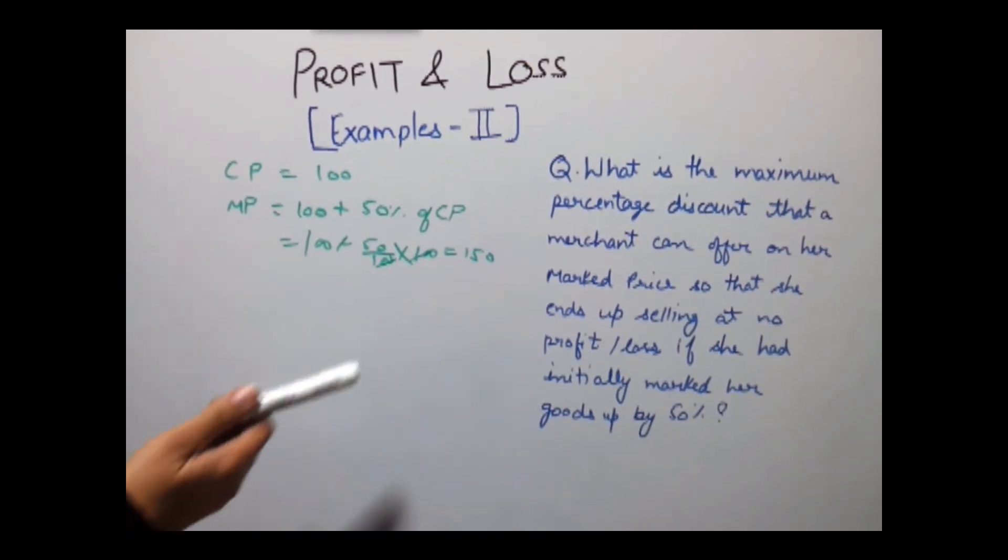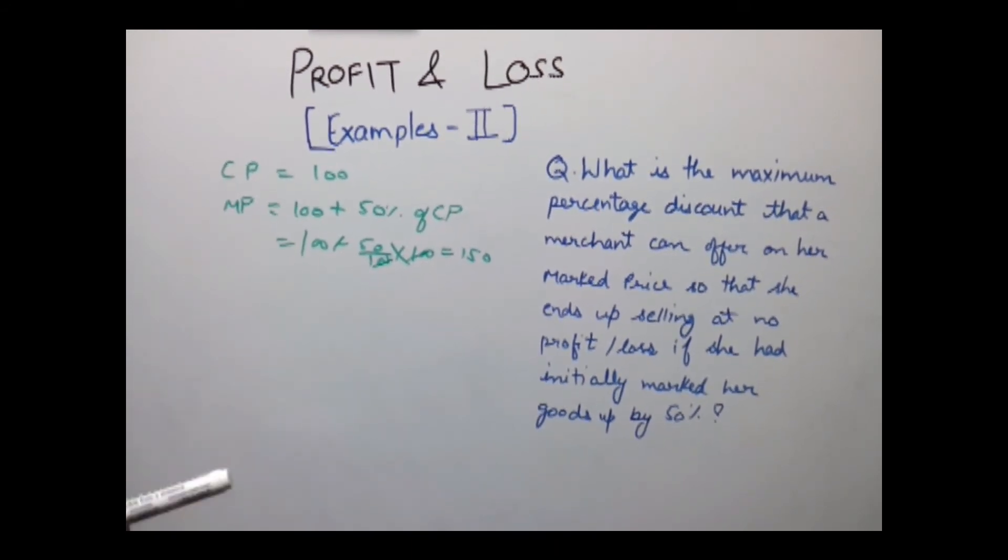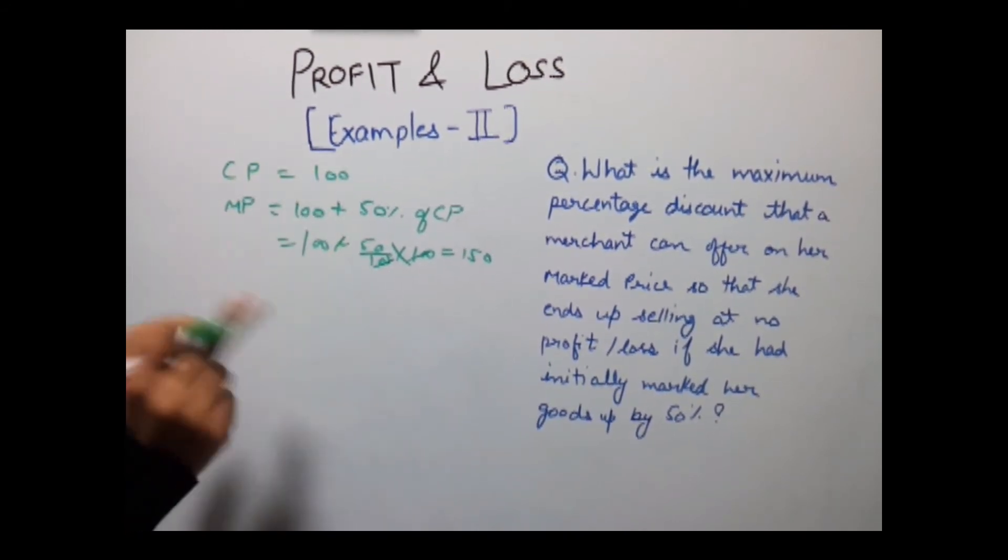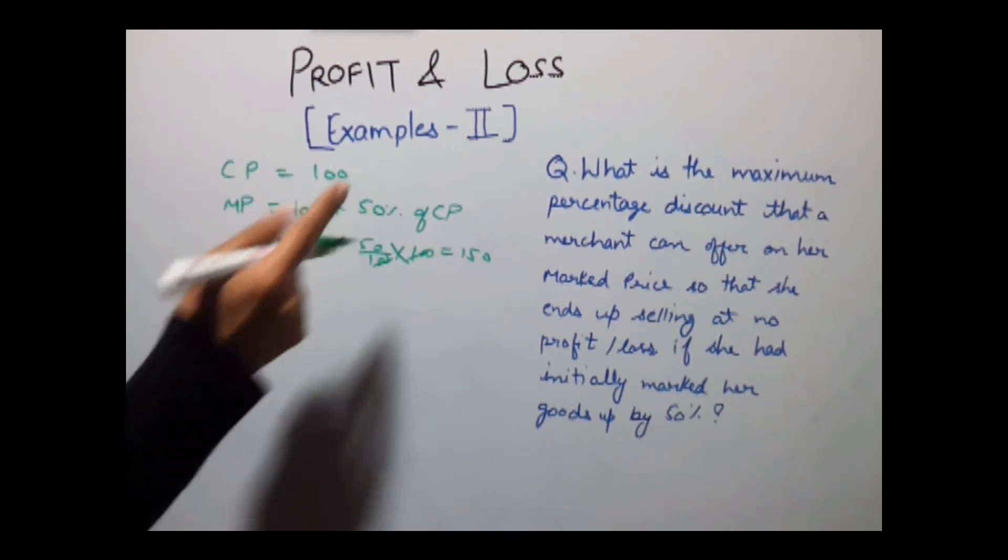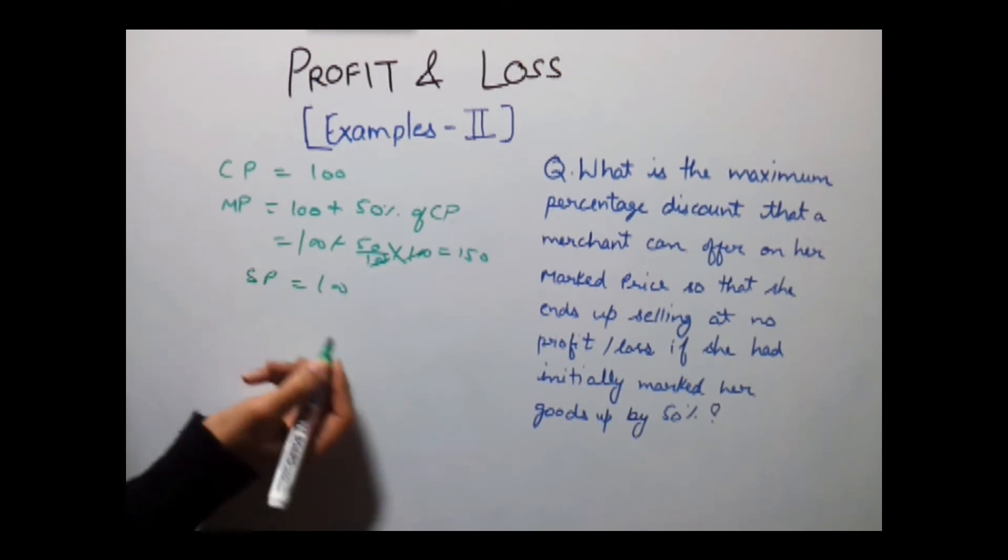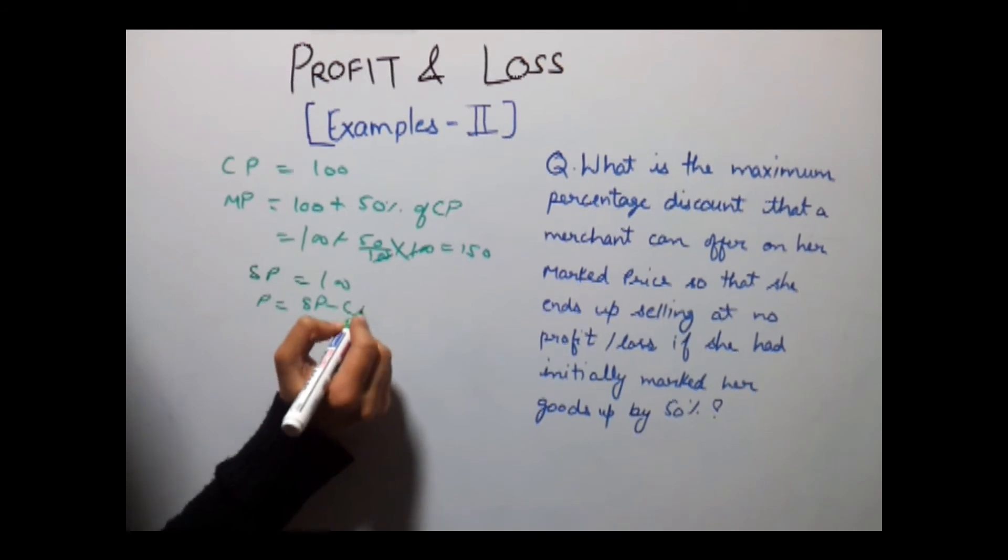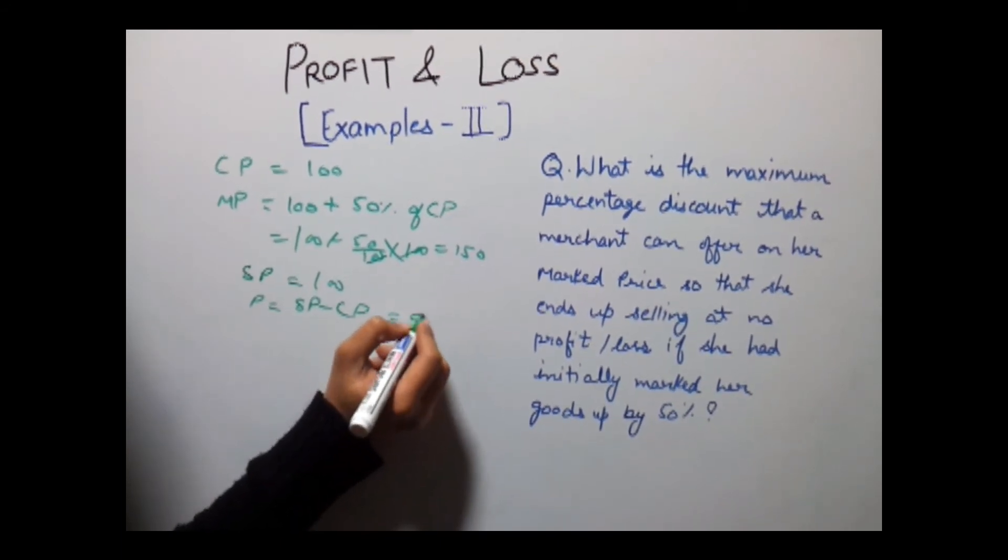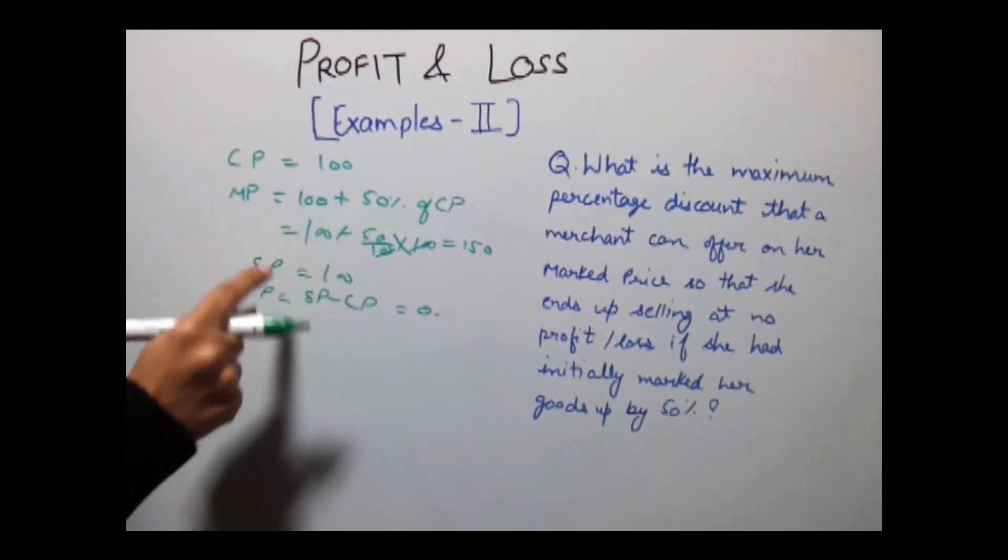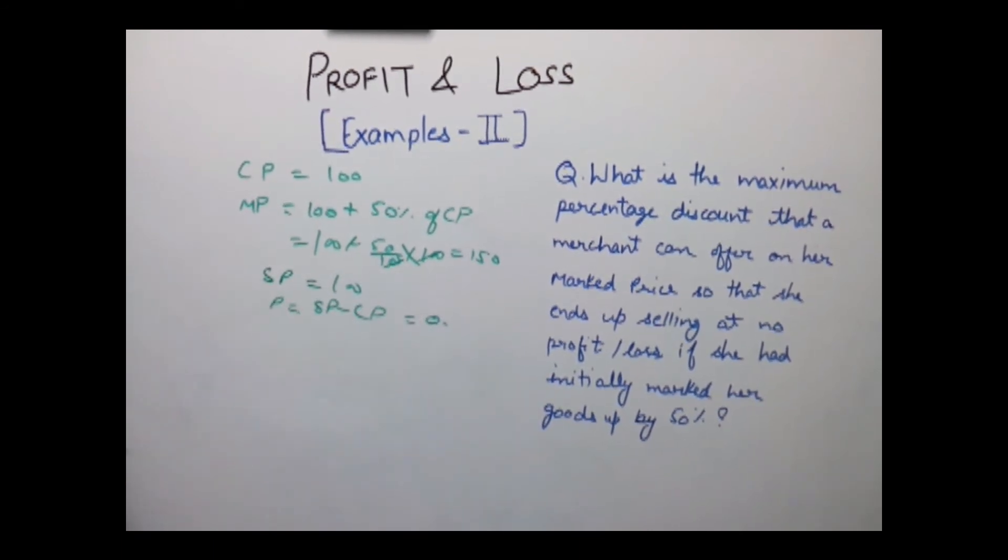Now the question asks that how much discount she needs to give so that she makes no profit and no loss. In this case, if she has to make no profit and no loss, she has to sell the goods at CP, that is at Rs. 100 only. So SP becomes equals 100 and our profit becomes SP minus CP, that is 0. So in this case she will earn no profit no loss, but the difference between the marked price and this selling price is 50 rupees.